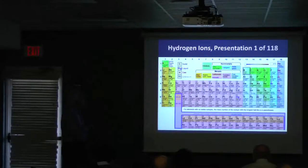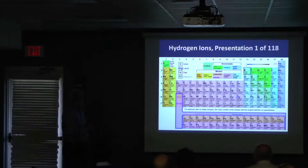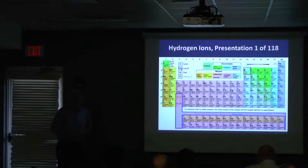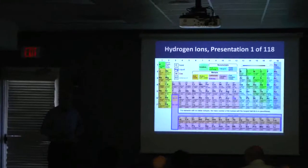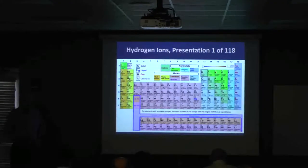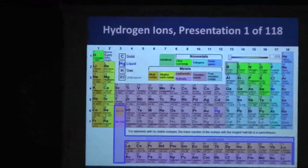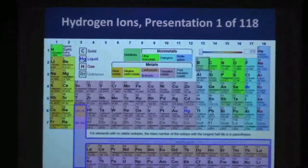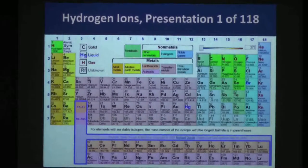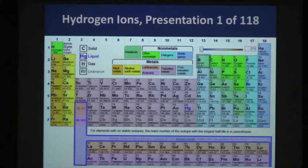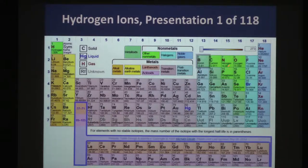I decided to start here, and one of the reasons is that about 25 percent of my previous work, publications and so forth, have explicitly involved this element in the form of hydrogen ions. About another 20 percent has involved these elements down here, and the other 55 percent has involved this series of elements in the periodic table — the platinum group elements.